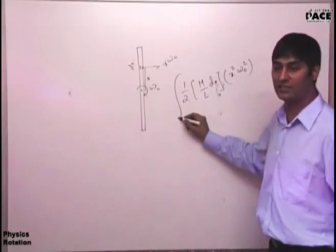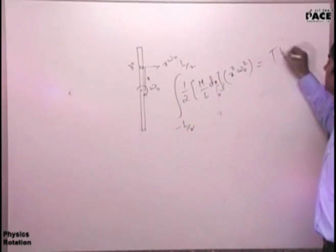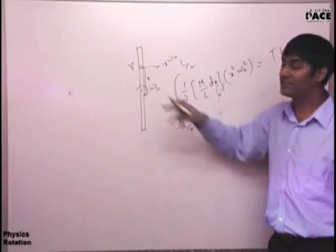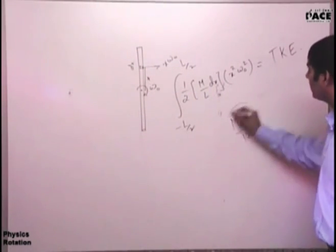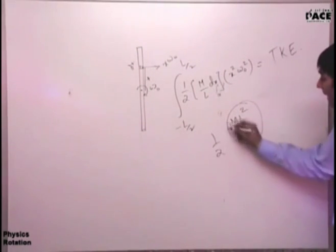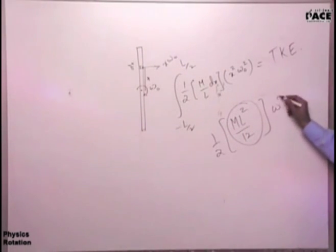And now you integrate this from minus l by 2 to l by 2. This will give you the total kinetic energy. Another way - what is the moment of inertia? ml squared by 12. We have defined this mathematical quantity and ask for physical significance. Half into I, half mv squared becomes half I into omega squared. You will get the same term.